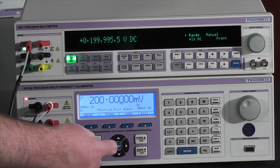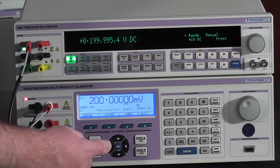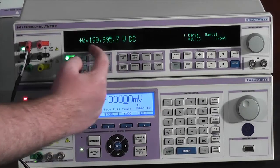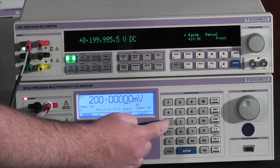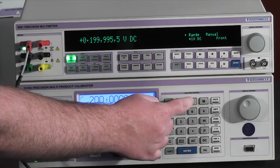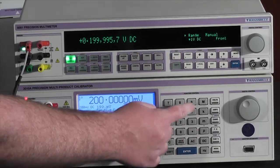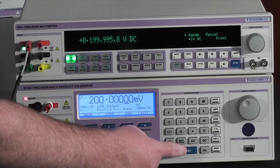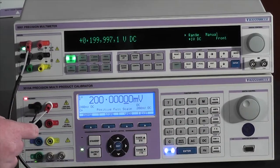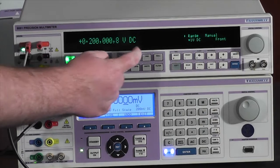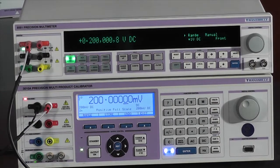Once again, I can adjust this using the cursors or I can directly enter the value that has been measured by the multimeter. So 199.995. Pressing enter will automatically adjust the calibrator to the correct output.